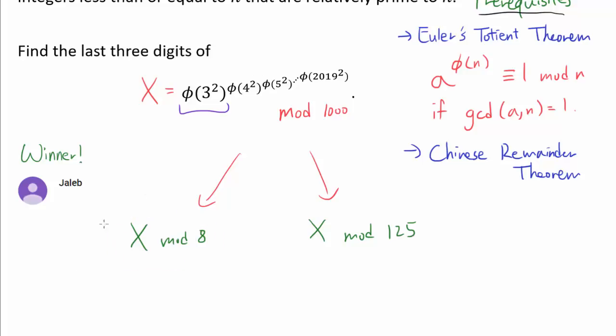X mod 8 is very easy to find because phi of 3 squared equals 2 thirds times 3 squared. Because from 1 to 9, two thirds of the positive integers are not going to contain 3 in the prime factorization. So we know phi of 3 squared is simply 6. We are raising 2 times 3 to some very large power. If you raise 2 times 3 by a large power, is the entire thing going to be divisible by 8? Of course it will. So we know X mod 8 is going to be 0.